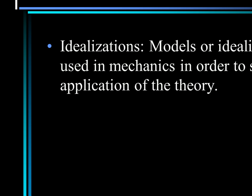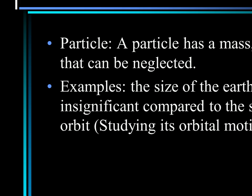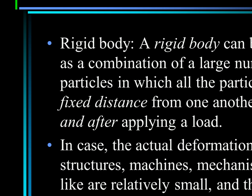Idealization models are used in mechanics in order to simplify application of the theory. A particle has a mass but a size that can be neglected — for example, the size of Earth is insignificant compared to the size of its orbit when you study its orbital motion. A rigid body can be considered as a combination of a large number of particles in which all the particles remain at a fixed distance from one another both before and after applying a load. In cases where actual deformation occurring in structures and machines is relatively small, the rigid body assumption is suitable for analysis.